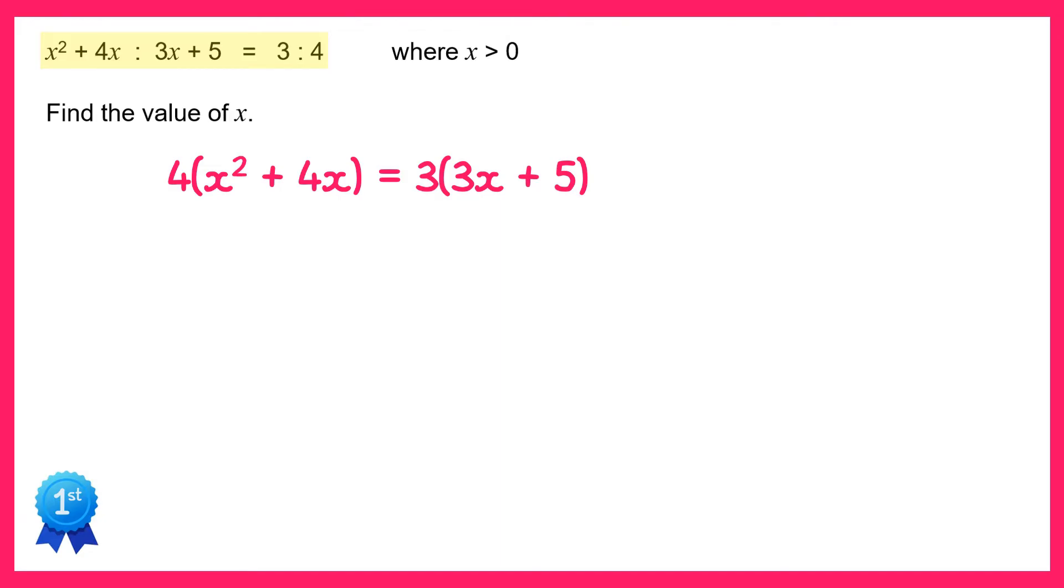Now we can just use algebra to solve this equation. If we expand the left hand side we get 4x squared plus 16x, and expanding the right hand side is 9x plus 15. If we now get all of the terms on the left, so subtract 9x and 15 from both sides, we get 4x squared plus 7x minus 15 equals 0.